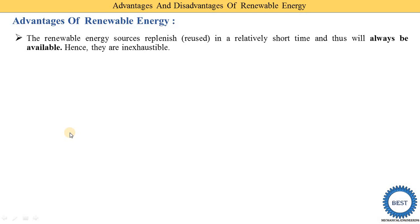The majority of these energy sources are available for shorter times and are available after a few hours, meaning they are intermittently available. For example, solar energy is available in the daytime and not available at nighttime. We can reuse renewable energy in relatively shorter times. Thus, they will always be available, hence they are inexhaustible.